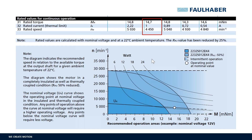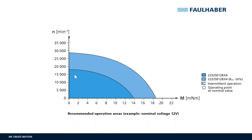What we see below is the torque-to-speed diagram of the motor. Again, this diagram is valid at an ambient temperature of 22 degrees Celsius. What we see in the dark blue area is the operating area in continuous operation without cooling. This goes from 18,000 rpm at no load to almost 40 millinewton meters.